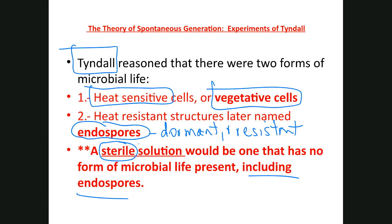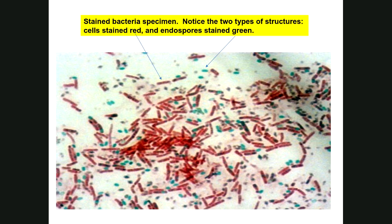That's what it means in microbiology to have a sterile solution, sterile environment, or sterile object. We won't see endospores under the microscope next week, but we can stain them. In this picture, the little green things are the endospores and the red are the vegetative cells.